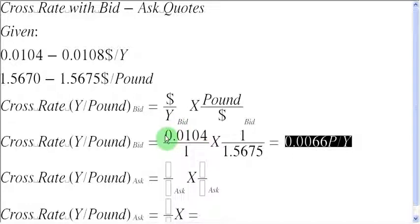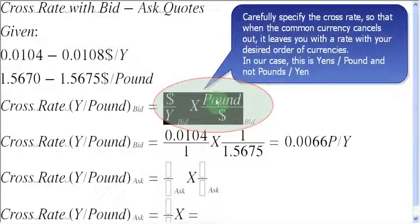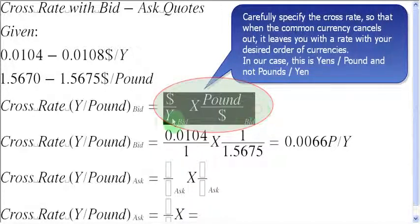What you need to do is carefully specify the equation from the beginning, so that when you cancel out the dollars, you are left with yens per pound — not pounds per yen.